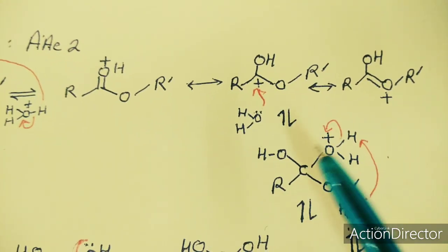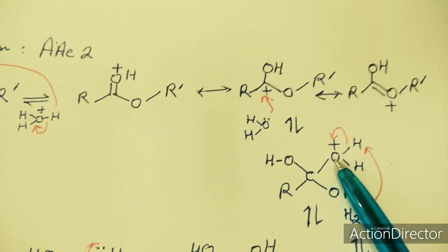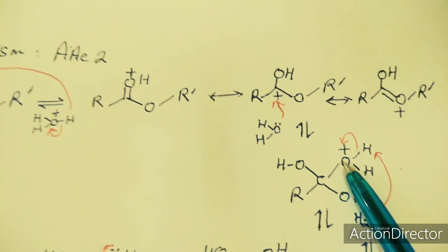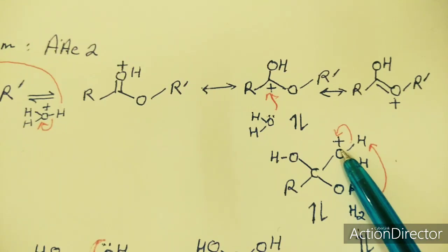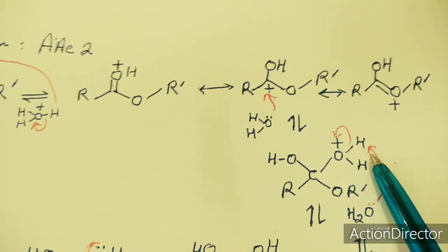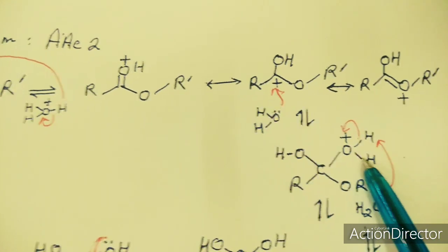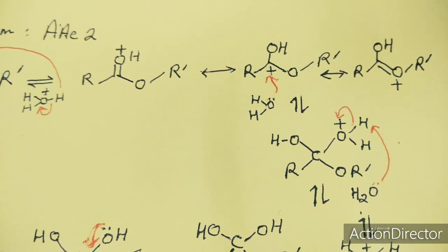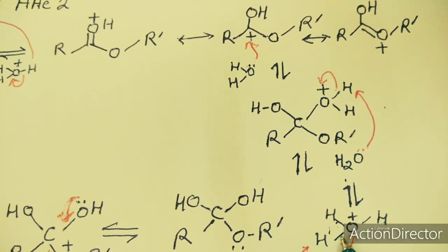Once H+ starts attacking, the reaction is driven forward. H2O as a neutral molecule can escape, but to move the reaction forward, another H2O molecule removes the positive charge by pulling the hydrogen electron pair from the oxygen, taking the positive charge with it as H+. As a result, we get two OH groups — one newly formed, one already present — and H2O is changed to H3O+, the hydronium ion.